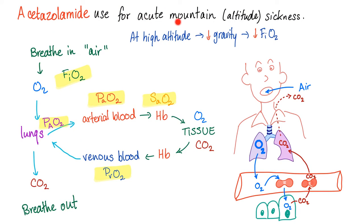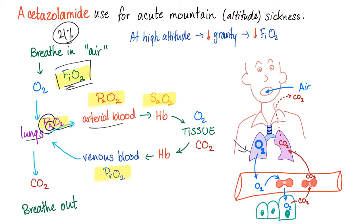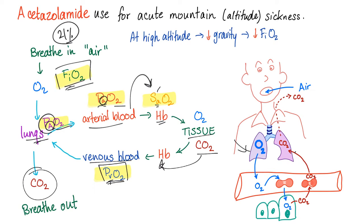Before we talk about acetazolamide used for acute mountain sickness, let's first talk about the different types of oxygen. Oxygen in the atmospheric pressure is called FiO2 — the famous 21% of atmospheric air. You breathe in FiO2. In your lungs, we call it P-big-AO2, big A for alveolar. Then it goes to the arterial blood via exchange — we call it P-small-aO2, small a for artery. Then it jumps on the hemoglobin on the red blood cell — we call it S-small-aO2, S for saturation, A for arterial. Then it goes to the tissue, CO2 goes to the hemoglobin as carbaminohemoglobin, then to the venous blood, PVO2, V for vein, and back to the lung where you exhale CO2.